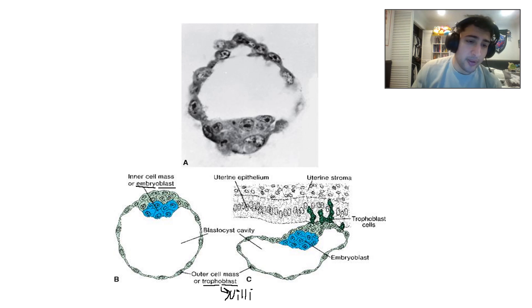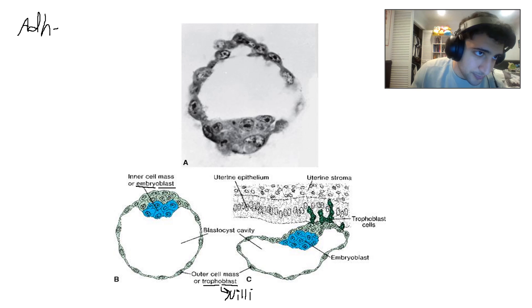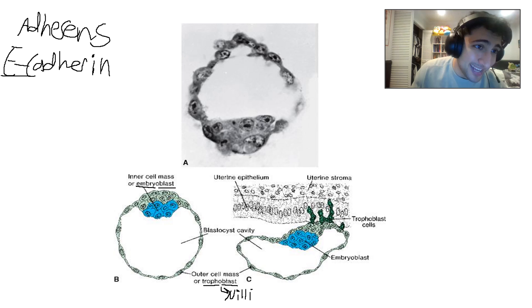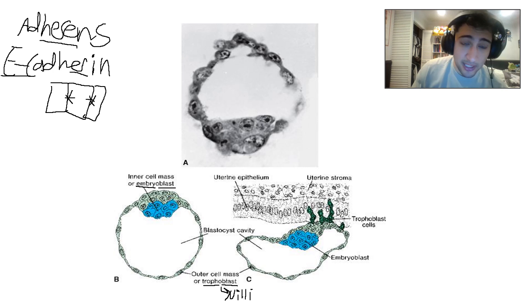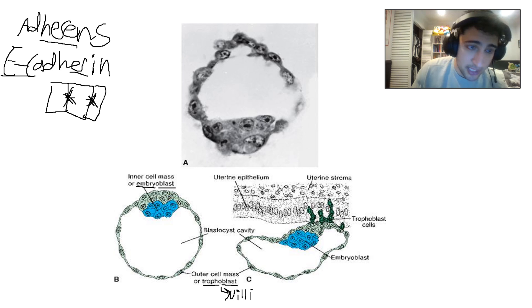The cells are held together by adherence junctions, and there's a very important protein called E-cadherin. The way I remember it: E-cadherin keeps cells here. If E-cadherin is mutated, like what happens in cancer, cells are no longer held together, and a tumor cell is free to invade and go somewhere else. So that's high yield — cancer cells will have mutations in E-cadherin, which is supposed to keep cells together.